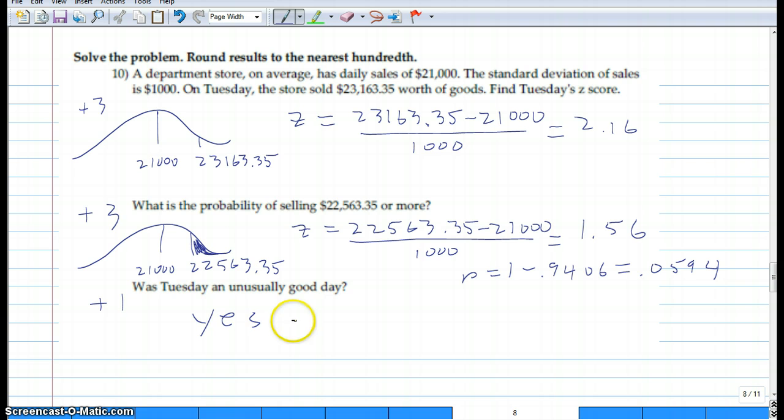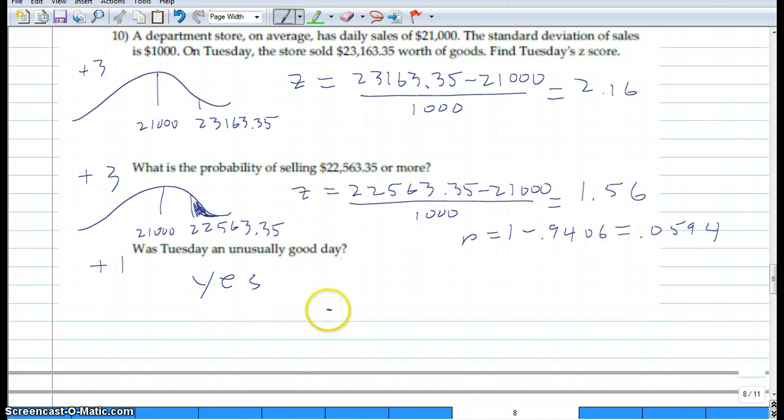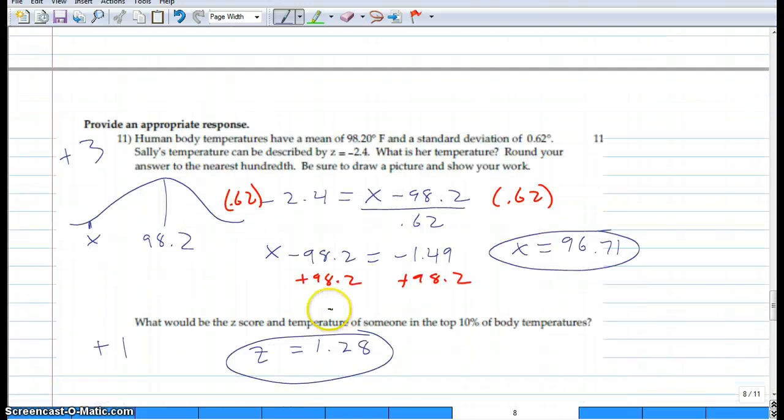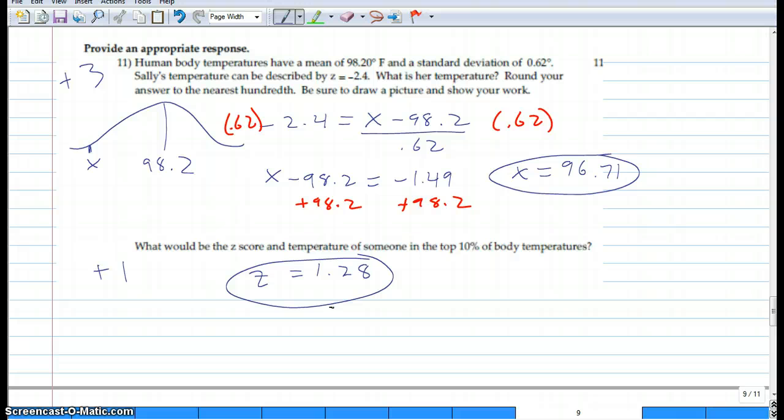Eleven: we want to calculate what is the temperature of somebody in the bottom 10%. What's the temperature that can be described with negative 2.4? So it's negative 2.4 standard deviations below the mean. There's our Z, we don't know the score. We do know the mean is 98.2 and the standard deviation. If we solve this for x, multiply both sides by 0.62 and then add 98.2, we get 96.71. Right here would be 96.71, representing somebody that's 2.4 standard deviations below.